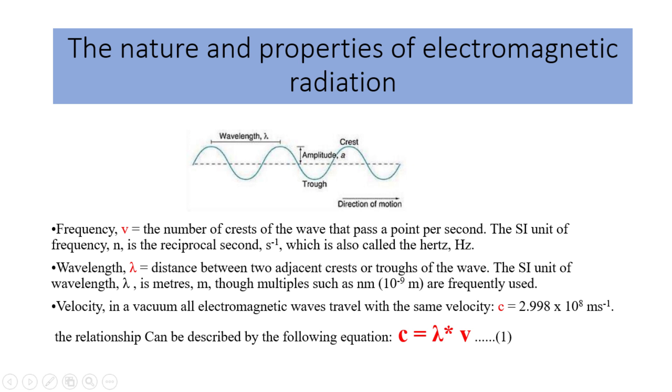To study the nature and properties of electromagnetic radiation, we have the following equation. c is equal to lambda multiplied by nu, whereas lambda is the distance between two adjacent crests or troughs of the wave. The SI unit of wavelength, lambda, is meters, but nanometers are frequently used. Frequency, nu, equals the number of crests of the wave that pass a point per second. The SI unit of frequency, nu, is the reciprocal second, s raised to the power minus 1, which is also called the hertz.